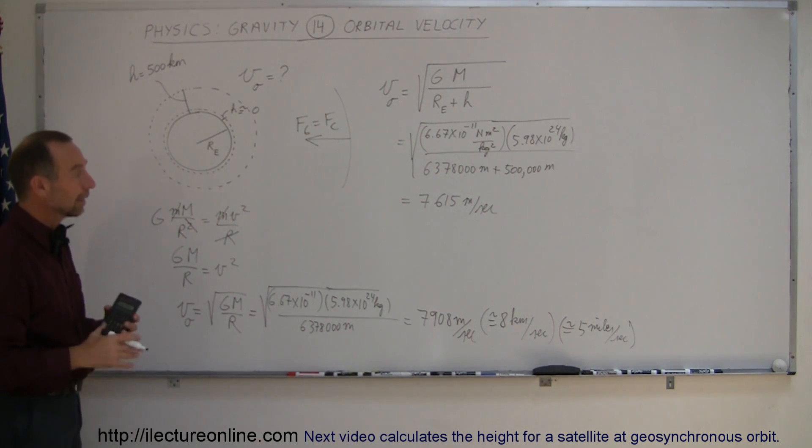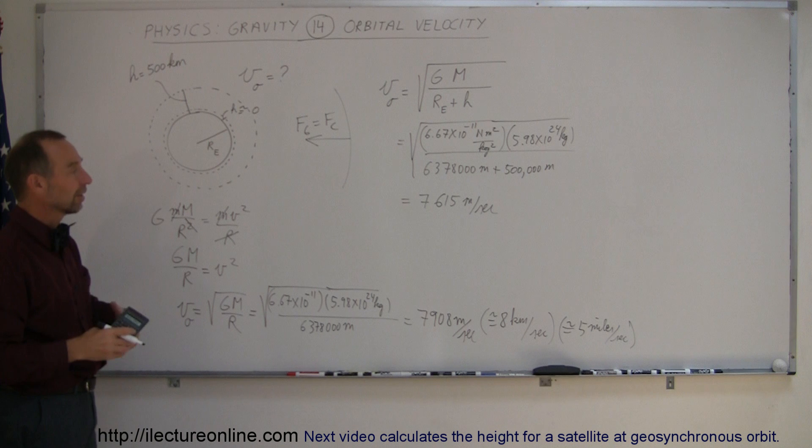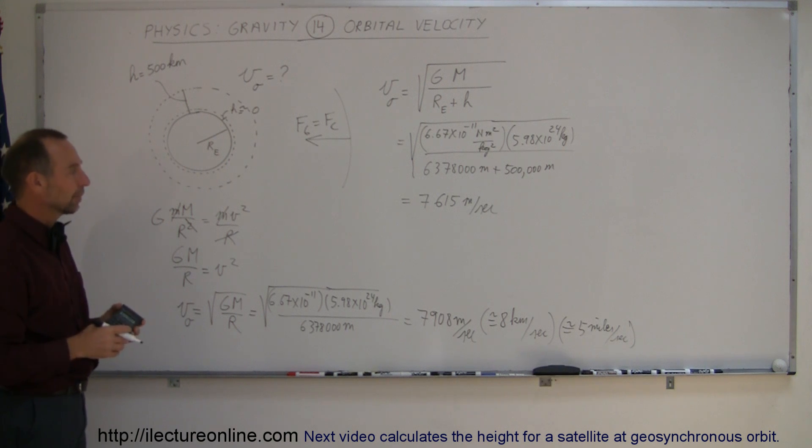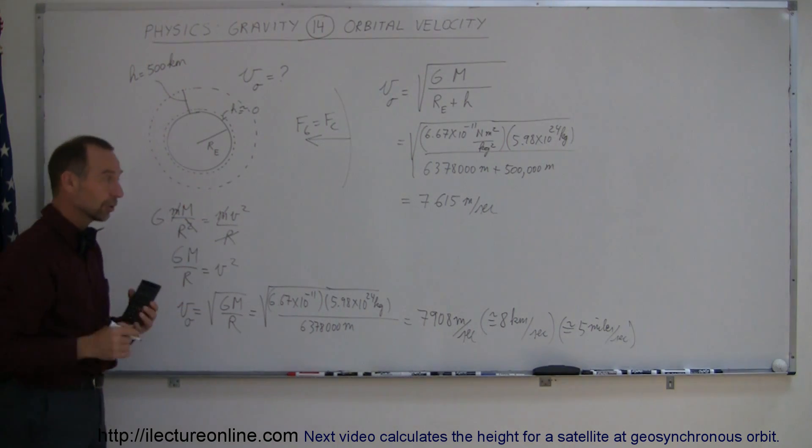So that would then be the typical orbit velocity of the satellite, 500 kilometers up above the surface of the Earth. Now, you may wonder, well, how long does it take one of those satellites to circumvent the Earth?